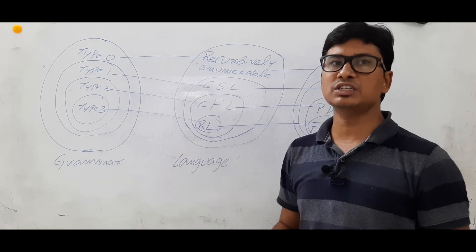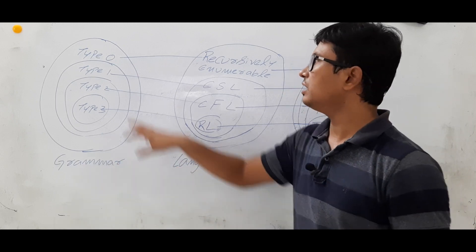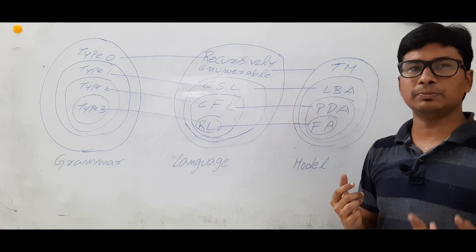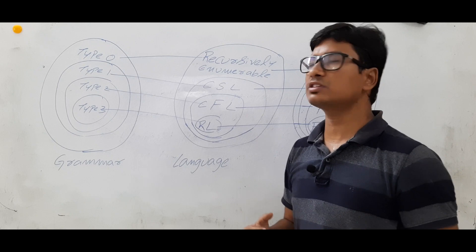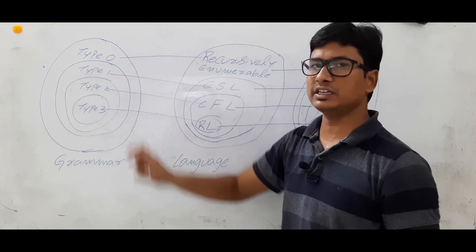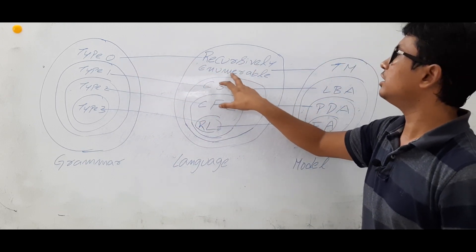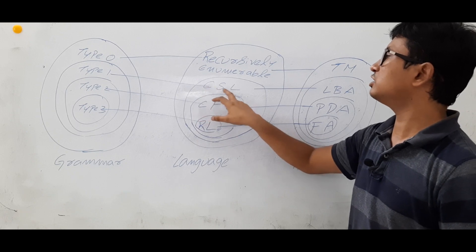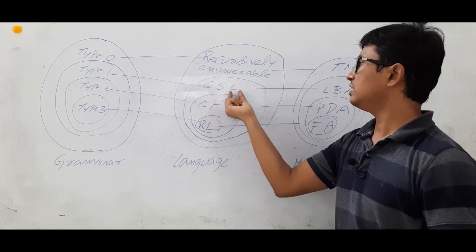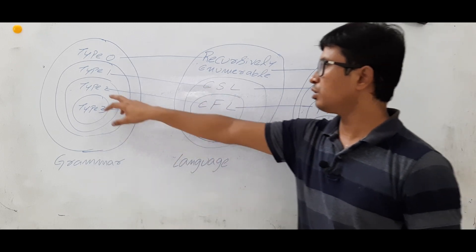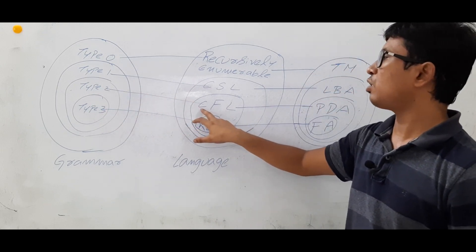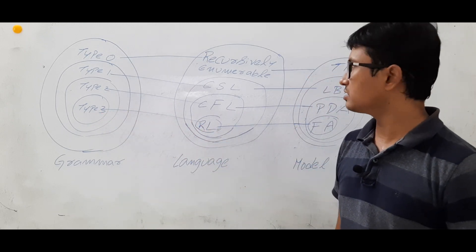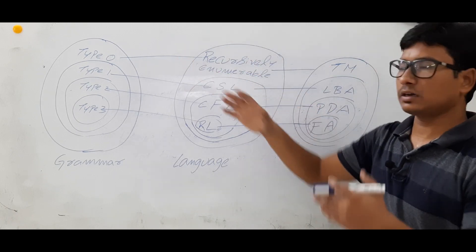Now I want to explain: if you have a grammar, what kind of language will it generate? A type 0 or unrestricted grammar generates a recursively enumerable language. A type 1 or context-sensitive grammar generates context-sensitive languages (CSL). A type 2 or context-free grammar generates context-free languages, and a type 3 or regular grammar generates regular languages.